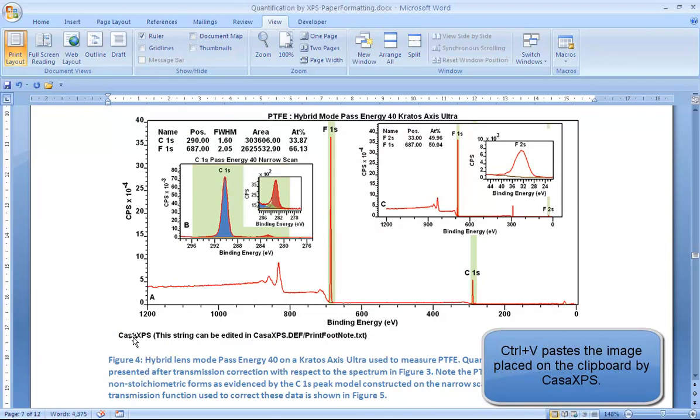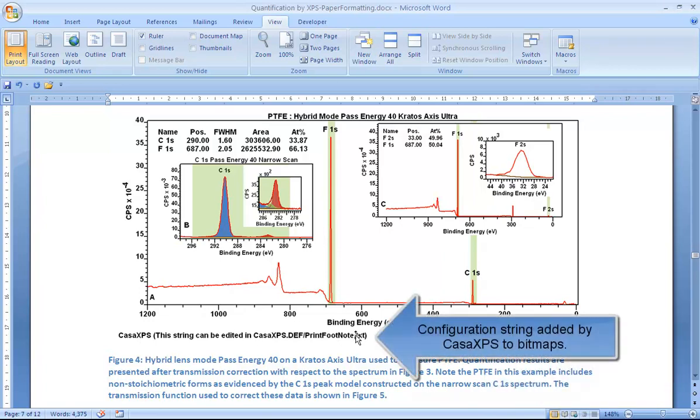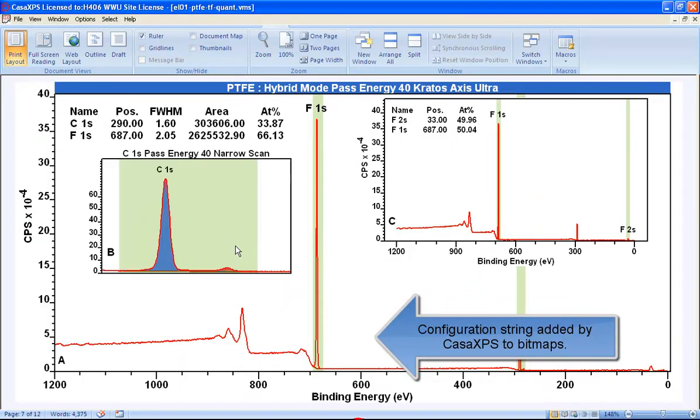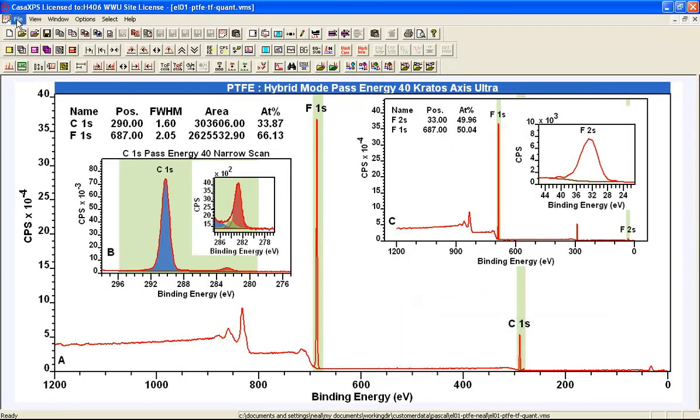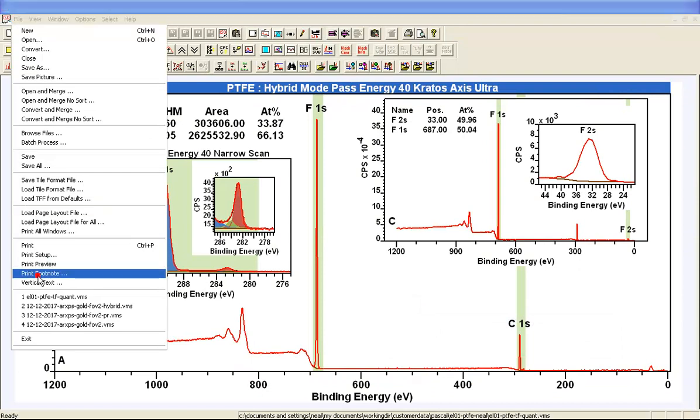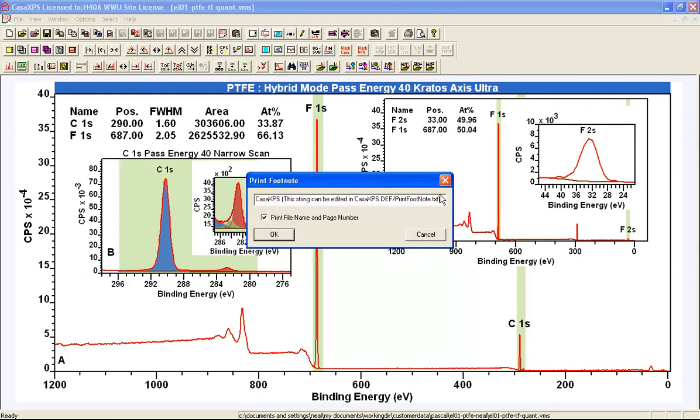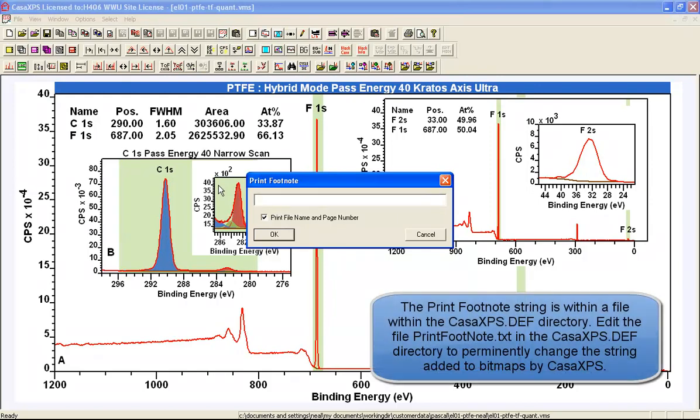Now this has included a string here that I don't really want. This is a string that you can add to any output in terms of display output from CASA. And if I now want to remove that, I just go to the print footnote option. And this is actually a string that's in a configuration file. So you could completely remove this if you like and permanently have it removed.